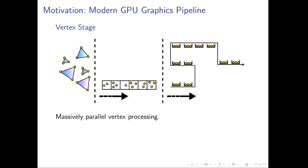As a motivation: nowadays, arguably, the most important coprocessor architecture is the graphics processing unit, the GPU. The purpose of the GPU is that of generating raster images. A raster image is a 2D array comprised of what we call pixels — those are tuples, usually color tuples.